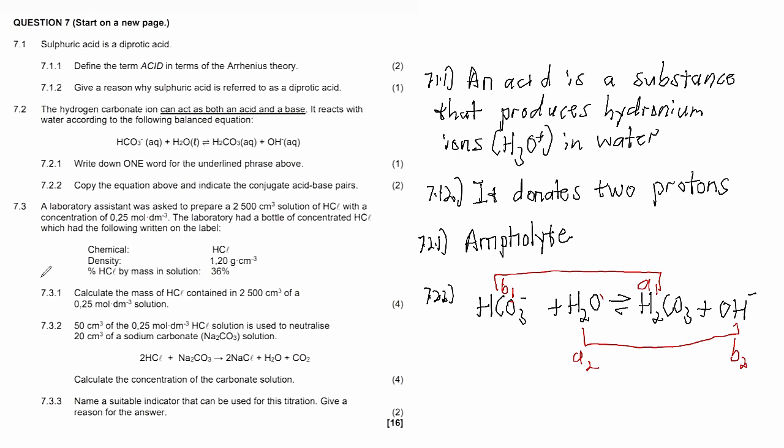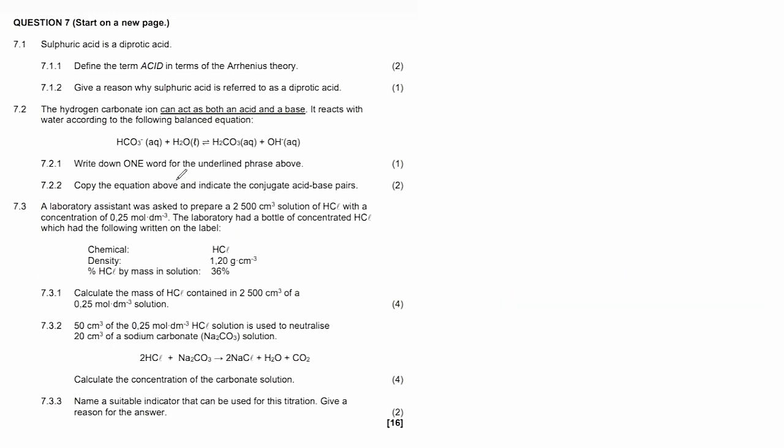7.3 says the laboratory assistant was asked to prepare a 2500 cm³ solution of hydrochloric acid with a concentration of 0.25 mol/dm³. The laboratory had a bottle of concentrated hydrochloric acid which had the following written on the label: density is 1.20 g/cm³ and the percentage of HCl by mass in solution is 36%. 7.3.1 says calculate the mass of HCl contained in the 2500 cm³ of 0.25 mol/dm³ solution.